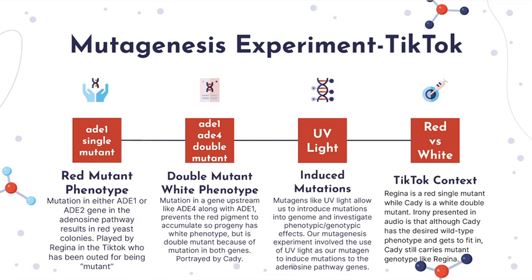Regina is a phenotypically red AD1 single mutant, while Katie is a phenotypically white AD1/AD4 double mutant. Regina has been outed as an AD1 mutant and is walking off upset. The irony is that although Katie has the desired wild-type phenotype and gets to fit in, Katie still carries the same AD1 mutation as Regina. The creamy white phenotype is expressed because a gene upstream has been mutated such that the intermediate produced by the AD1 gene is not made to begin with and does not accumulate to be converted to red pigment.